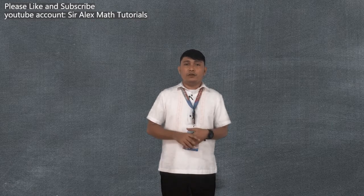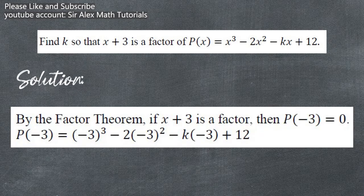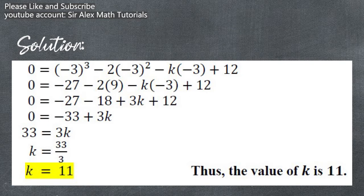These three should go hand in hand when solving word problems involving polynomial equations. Let us take this example: Find k so that x plus 3 is a factor of p of x equals x cubed minus 2x squared minus kx plus 12. We will solve for the value of k by substituting negative 3 into our equation. By the factor theorem, if x plus 3 is a factor, then p of negative 3 should equal zero. So p of negative 3 equals negative 3 cubed minus 2 times negative 3 squared minus k times negative 3 plus 12. The value of k is equal to 11.